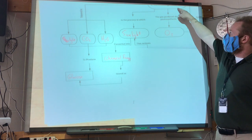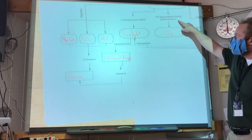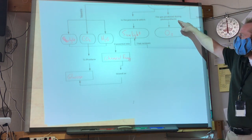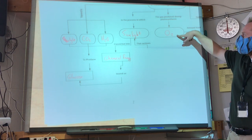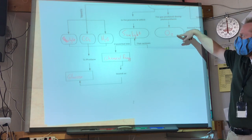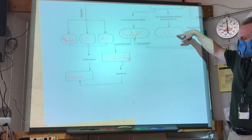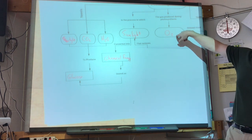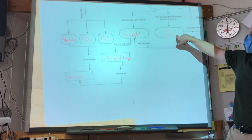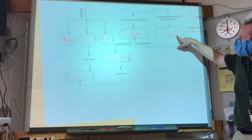Plants, through the process of photosynthesis, produce a gas called oxygen — O2. That's what we breathe in. We actually breathe in other gases, but O2 is the one we need for cellular respiration to occur.